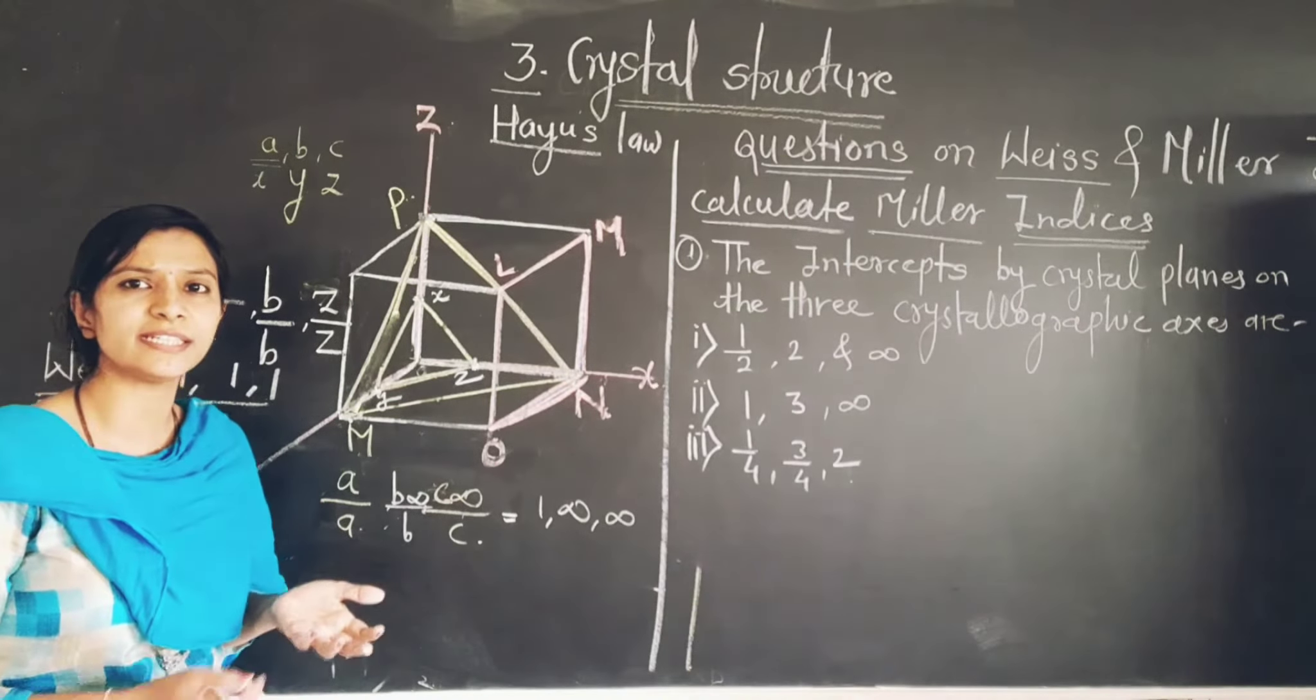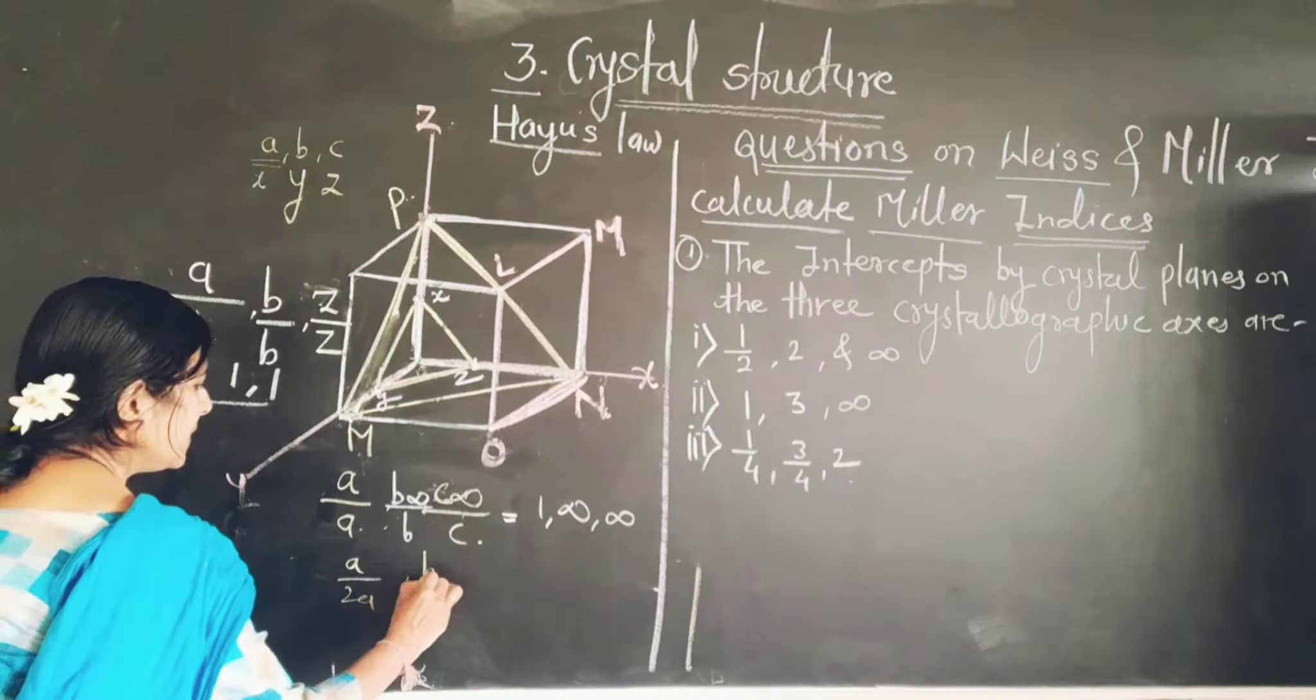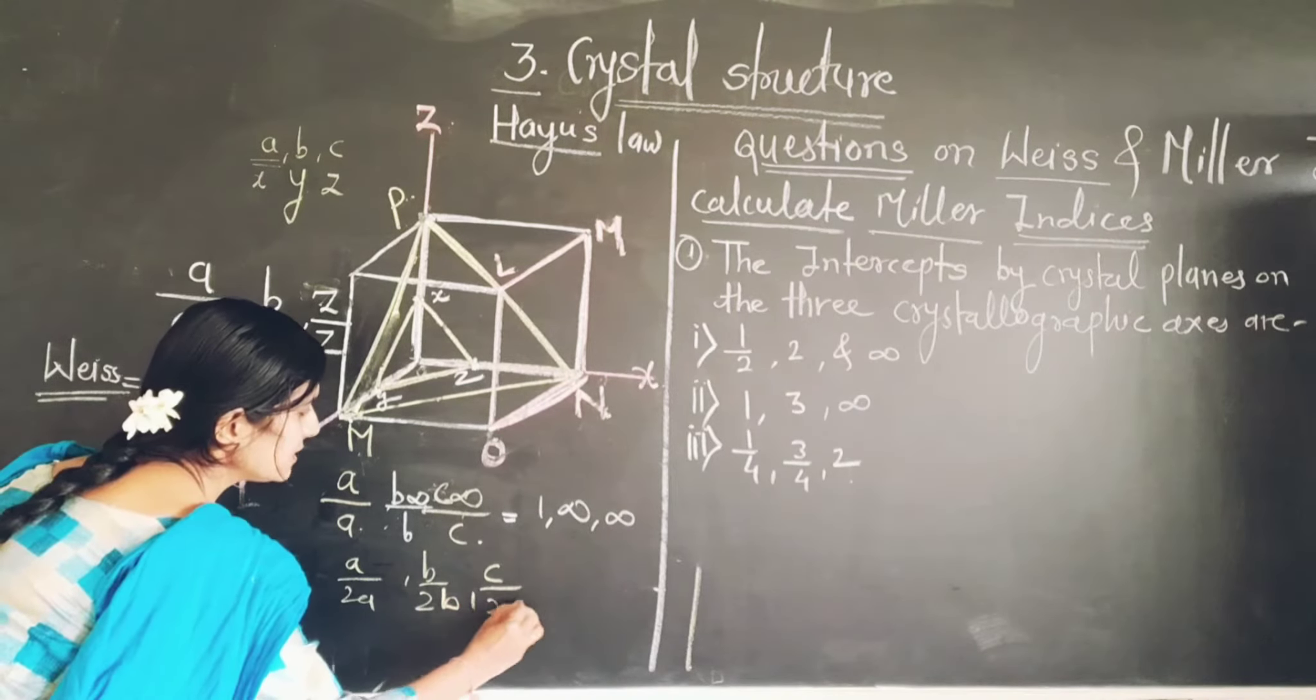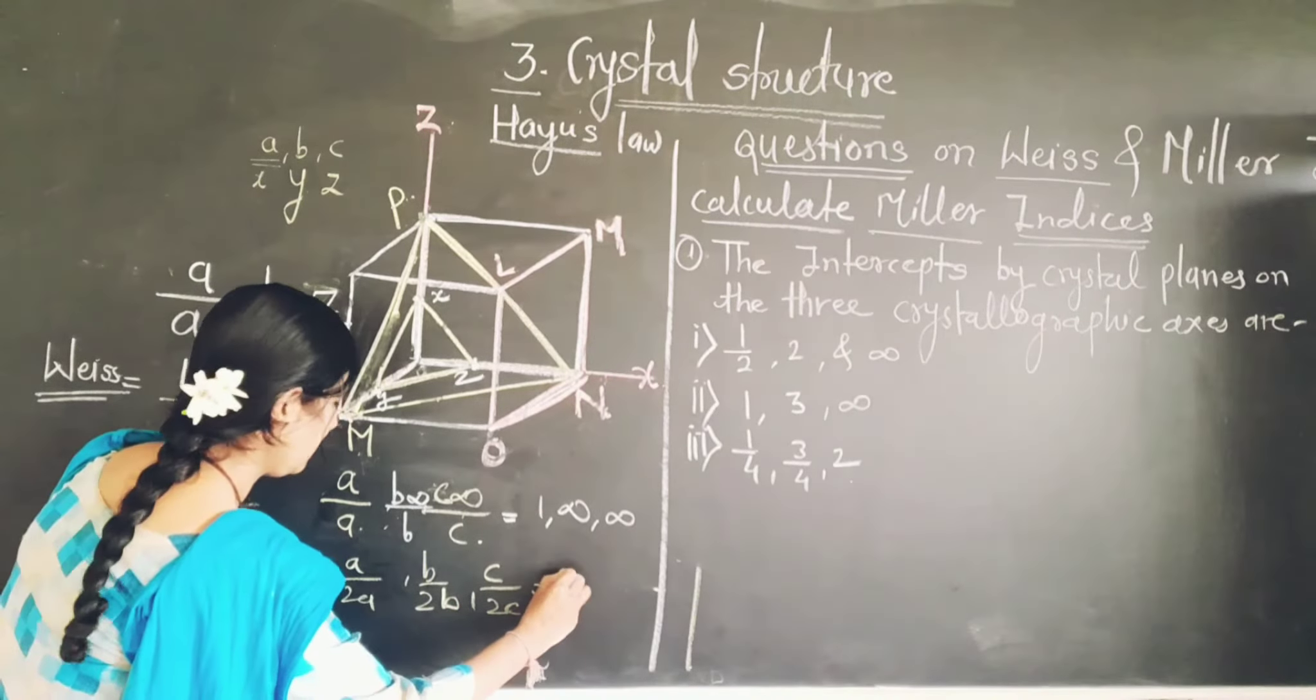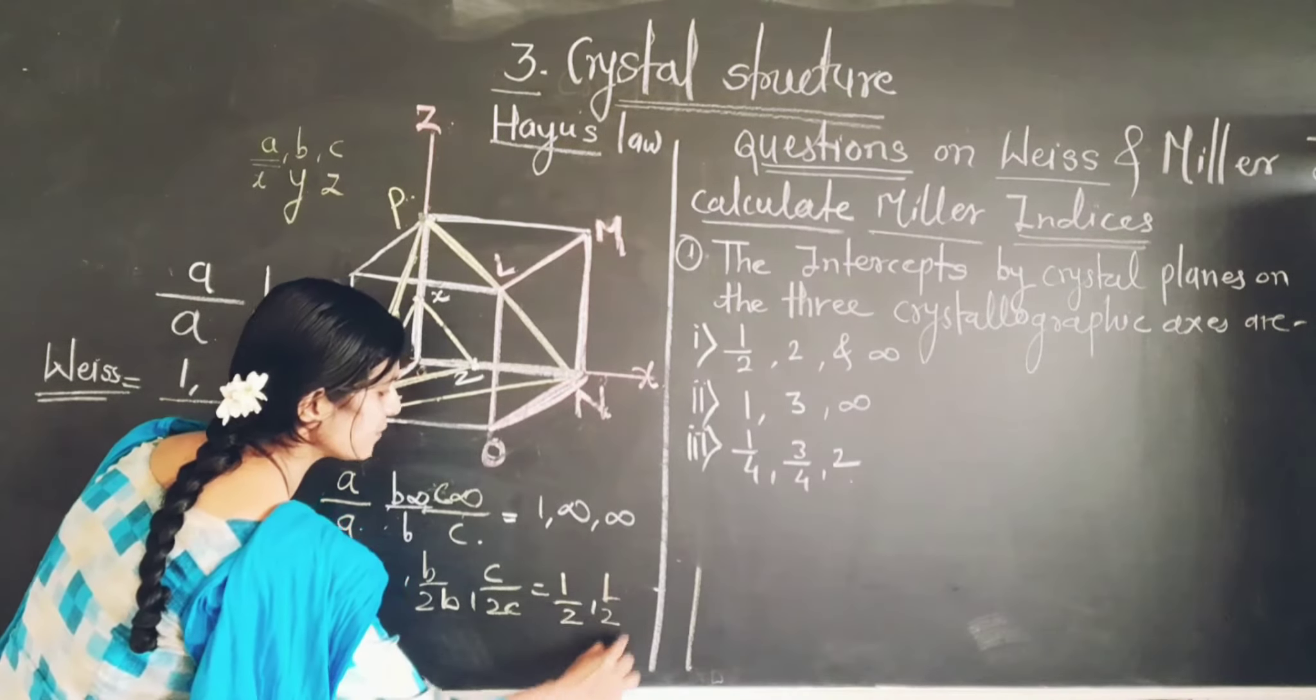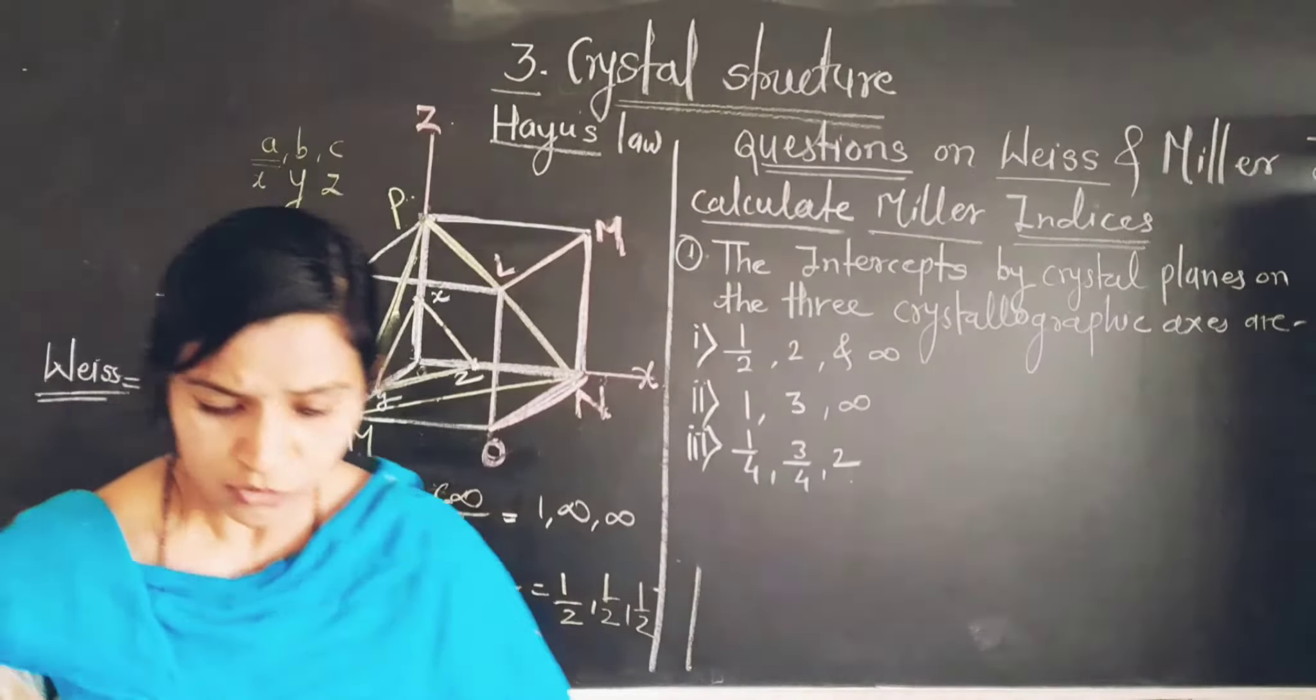Therefore, how do you write down the indices related to that? A by 2A, B by 2B, and C by 2C. You will get 1 by 2, 1 by 2 related to Y axis, and 1 by 2 related to Z axis. These are the Weiss indices of this.